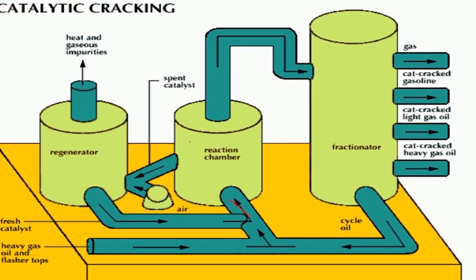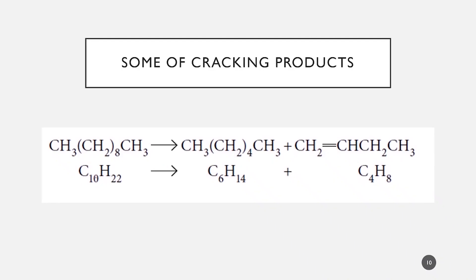The large hydrocarbon molecules will be cracked into smaller alkanes and alkenes molecules, which can be separated according to boiling point, similar to fractional distillation. One example of a reaction that can happen during the cracking process is where decane can break down into two compounds: hexane and butene. Butene contains a double bond and can be used as a starting material for many products such as plastics.